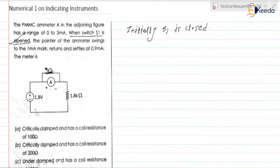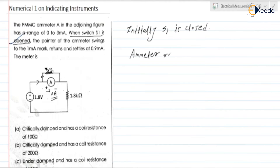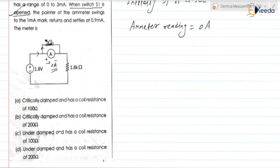When S1 is acting as a short circuit, the current flowing through the ammeter will be equal to 0 ampere, because current always follows the path with lesser opposition. The switch S1 resistance will be 0 ohm compared to the meter coil resistance. So when S1 is closed, ammeter reading is equal to 0 ampere.